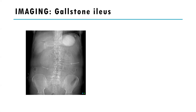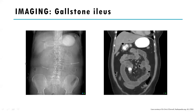Gallstone ileus is not commonly seen in Western countries nowadays but does occur. On CT of the same patient, there's air indicating a fistula — an abnormal connection between two epithelial-lined surfaces. The gallstone fistulated through the gallbladder wall into the duodenum and then made its way into the small bowel, causing gallstone ileus.